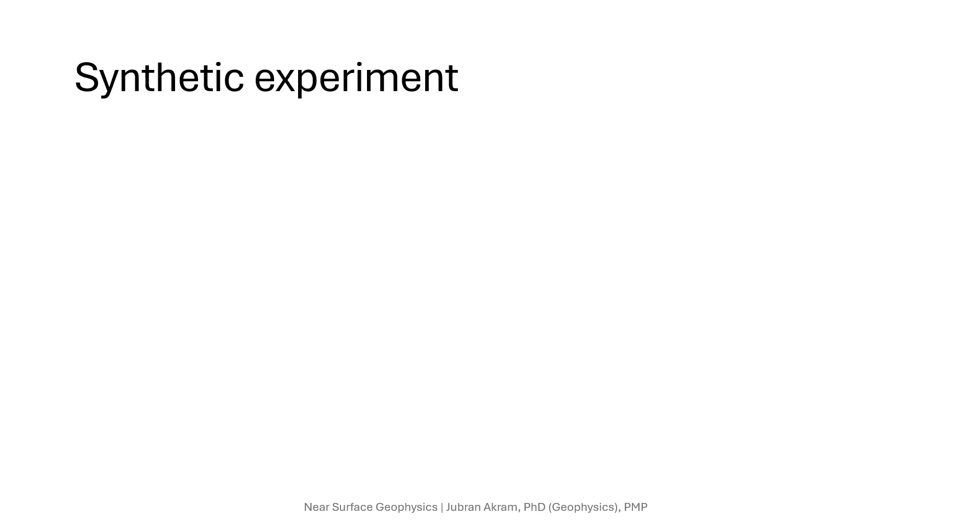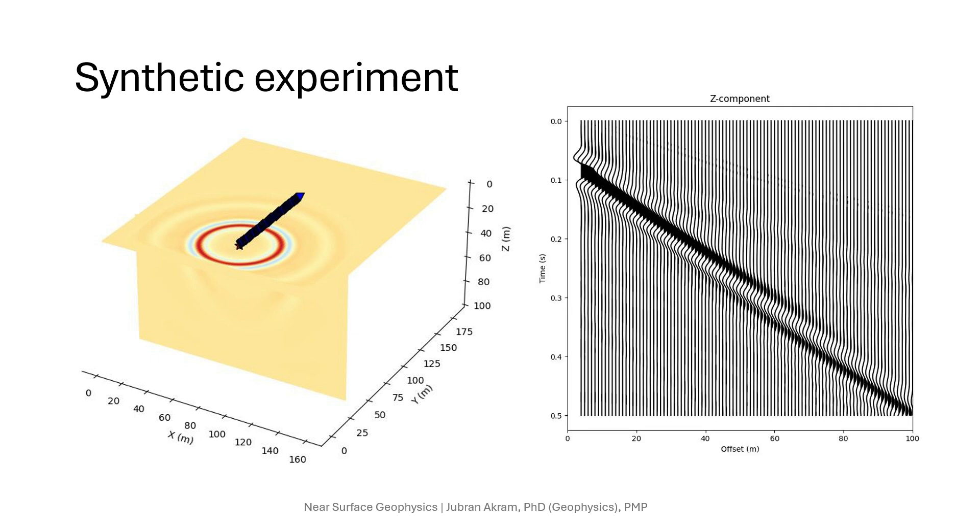As I said in the last slide, we perform 3D elastic waveform modeling with free surface condition to generate and record surface waves and then focus our analysis on the vertical component of the recorded wave field. The source in the synthetic experiment has a dominant frequency of 16 Hz and we use 100 receivers in a line to record the wave field. The geophone spacing is 1 meter.